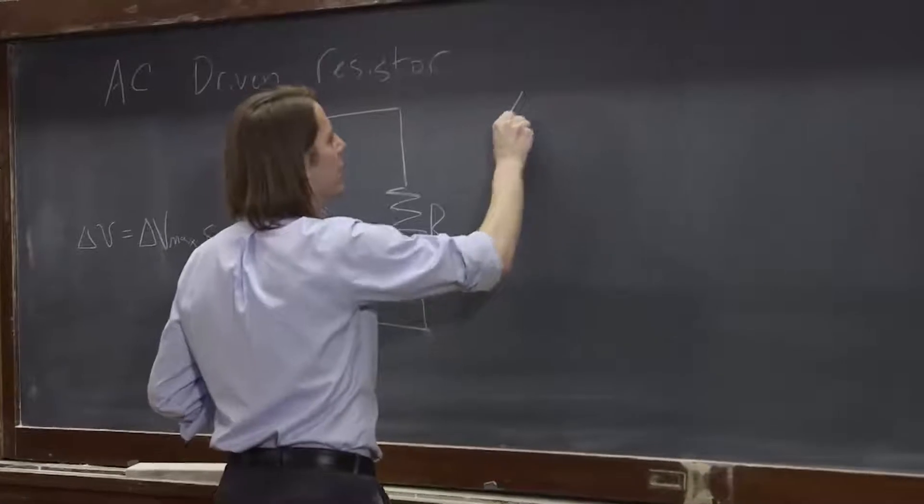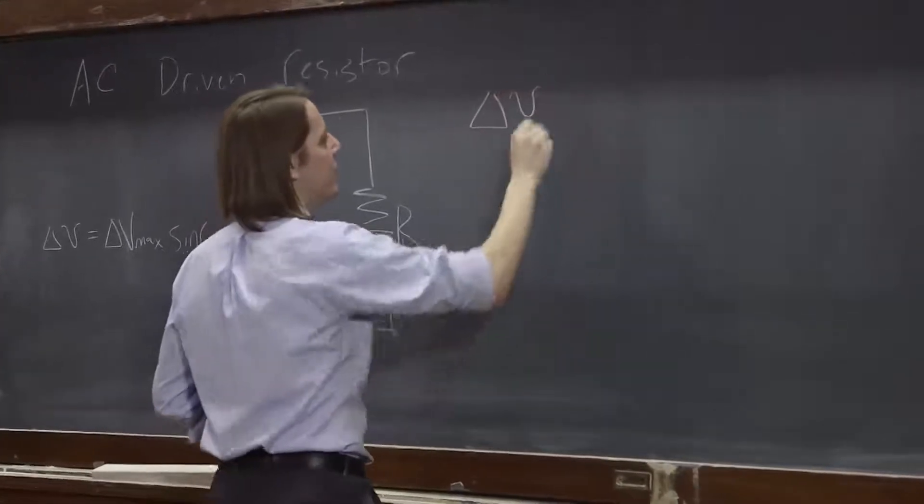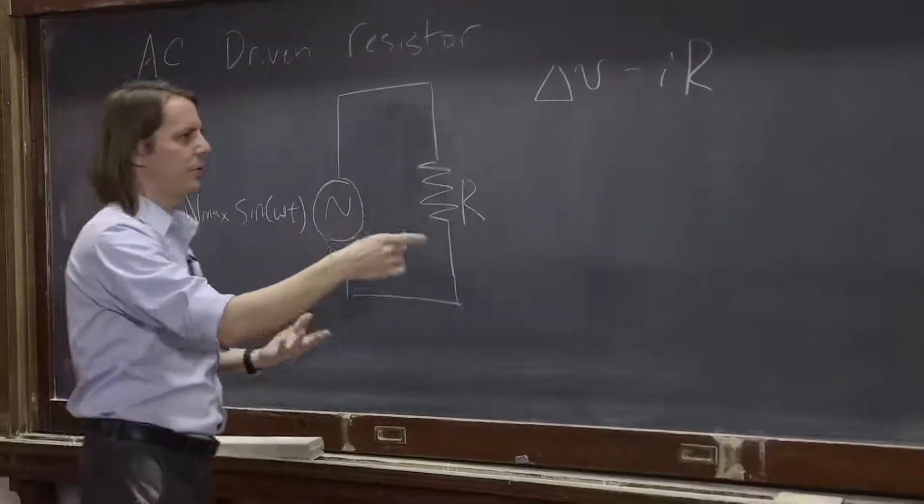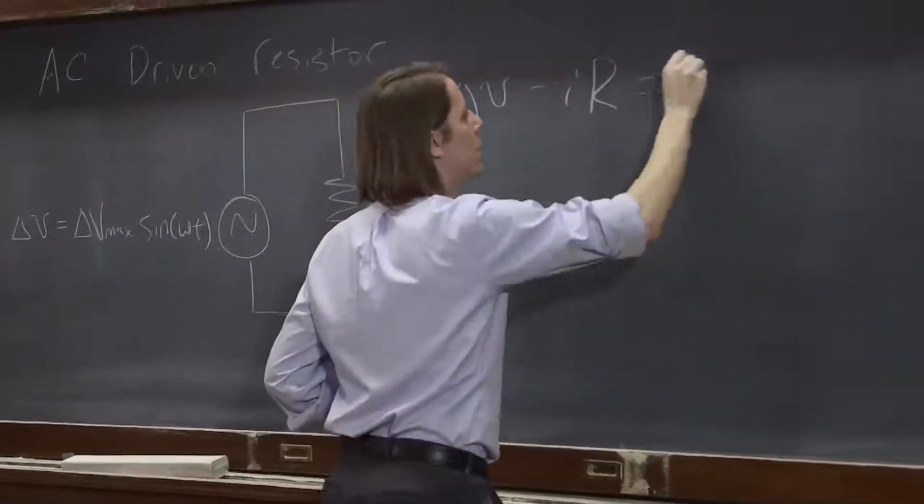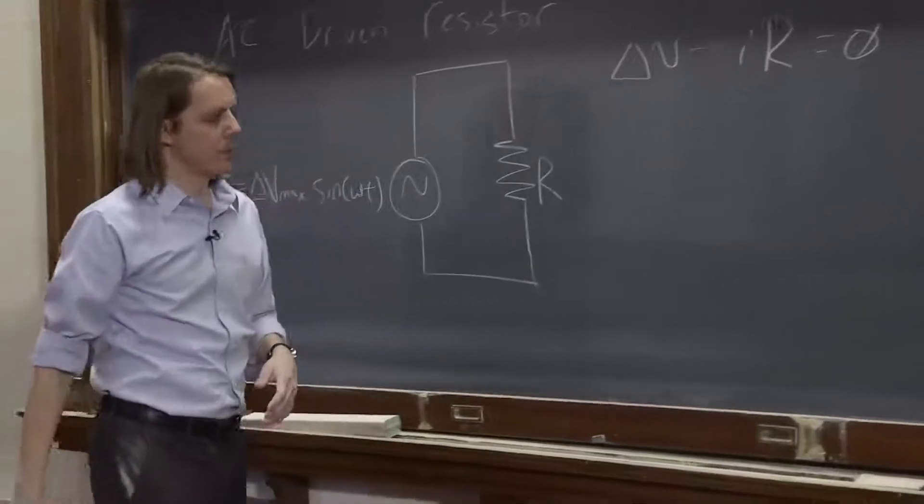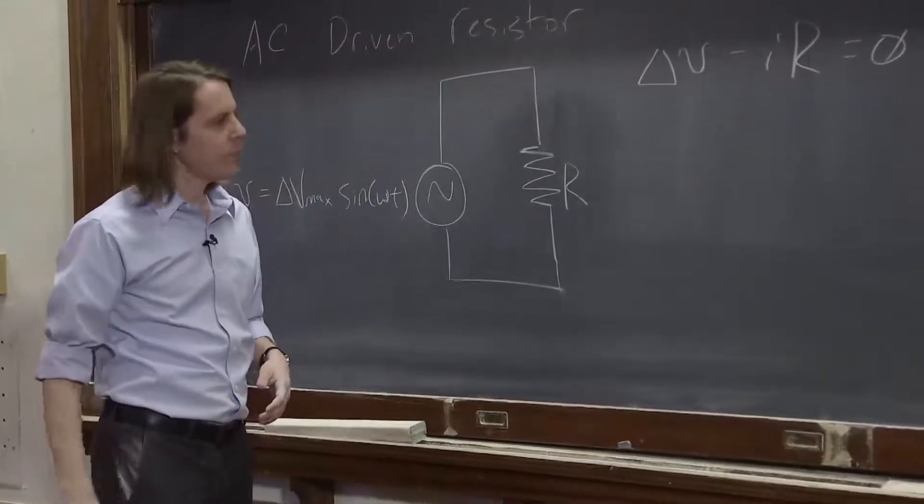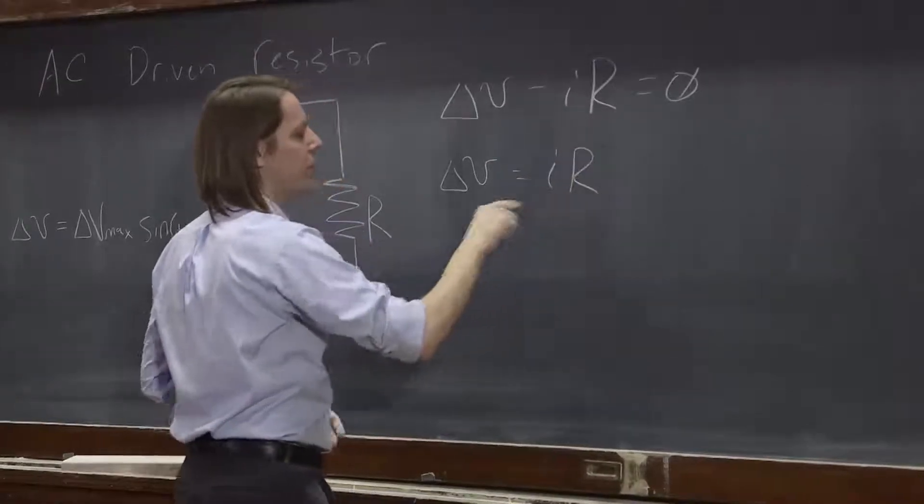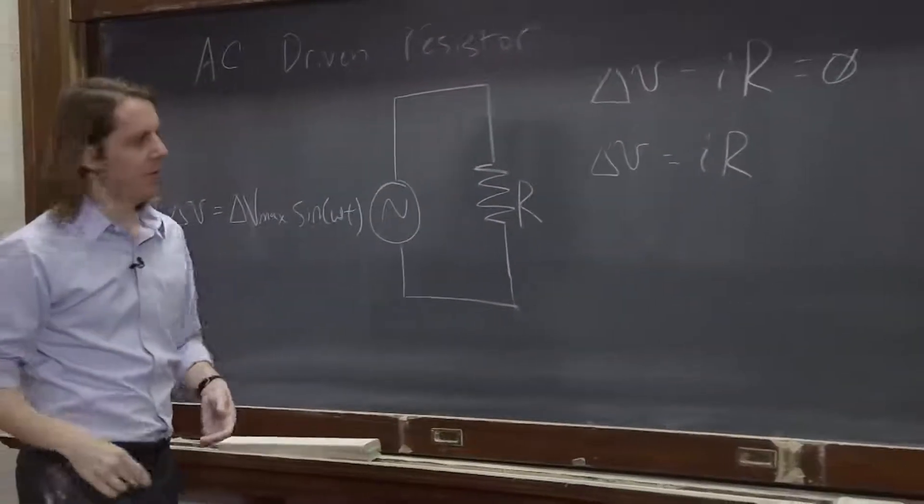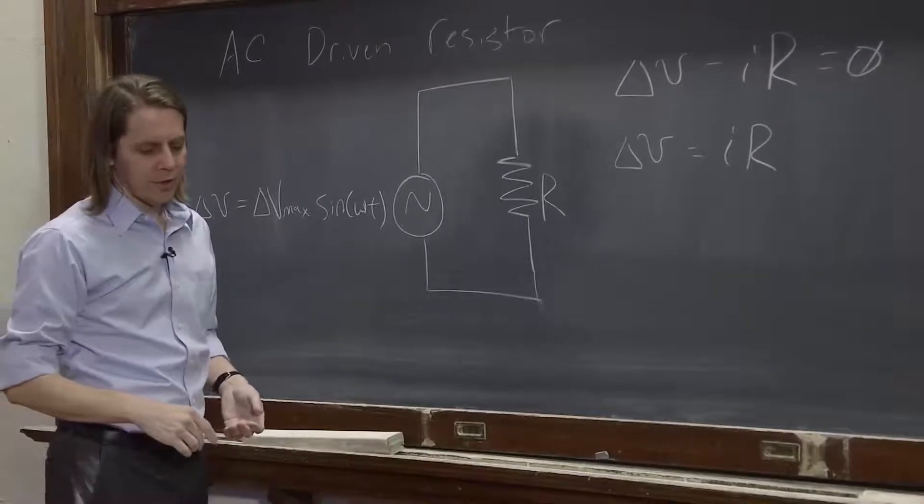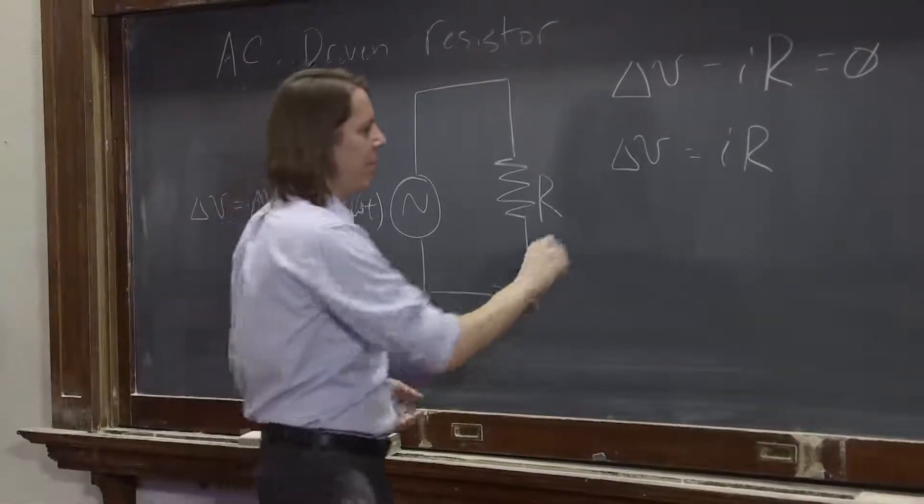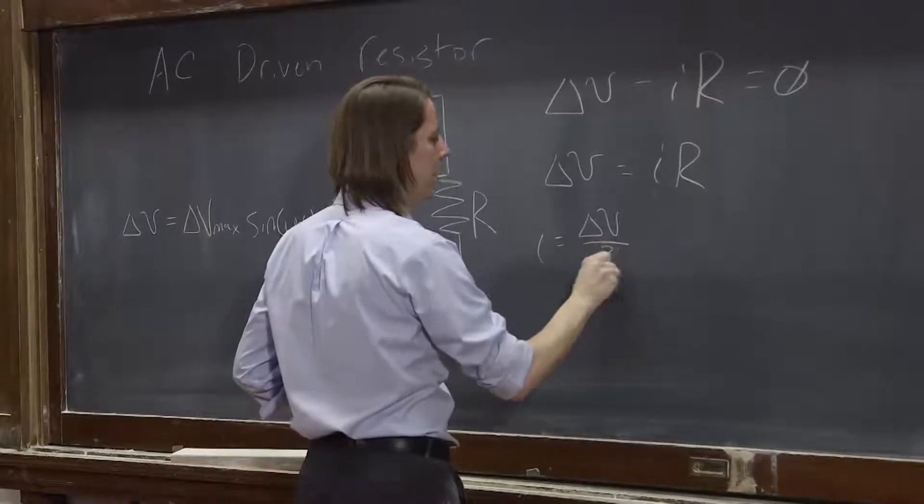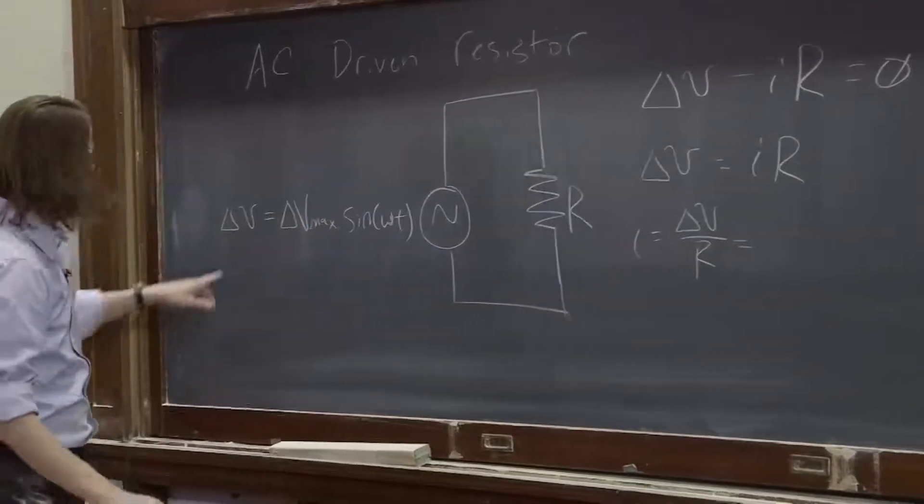Well, the power supply applies a delta V. There's some voltage drop across the resistor. Together those are equal. Their sum is equal to zero. So we know that then the little delta V that's oscillating in time equals IR. So the current must also oscillate in time because the resistor is constant. So we can then say I is the oscillating delta V over R.